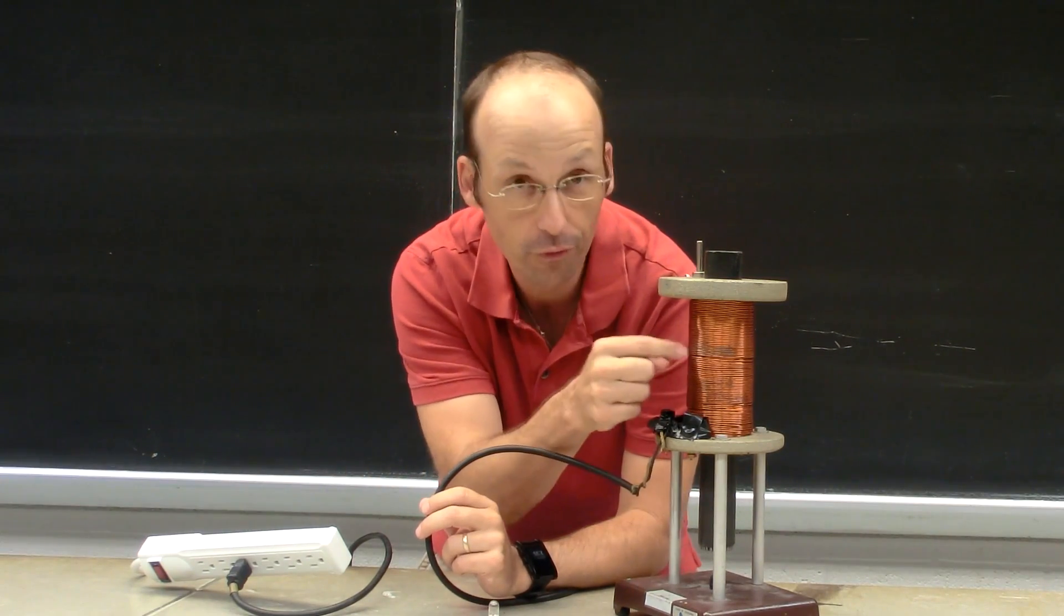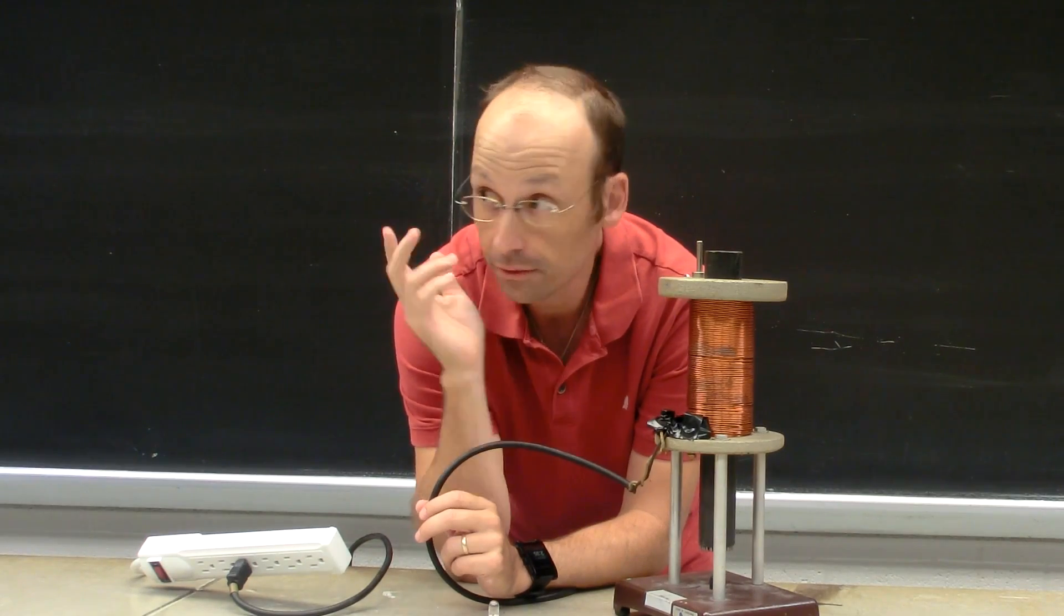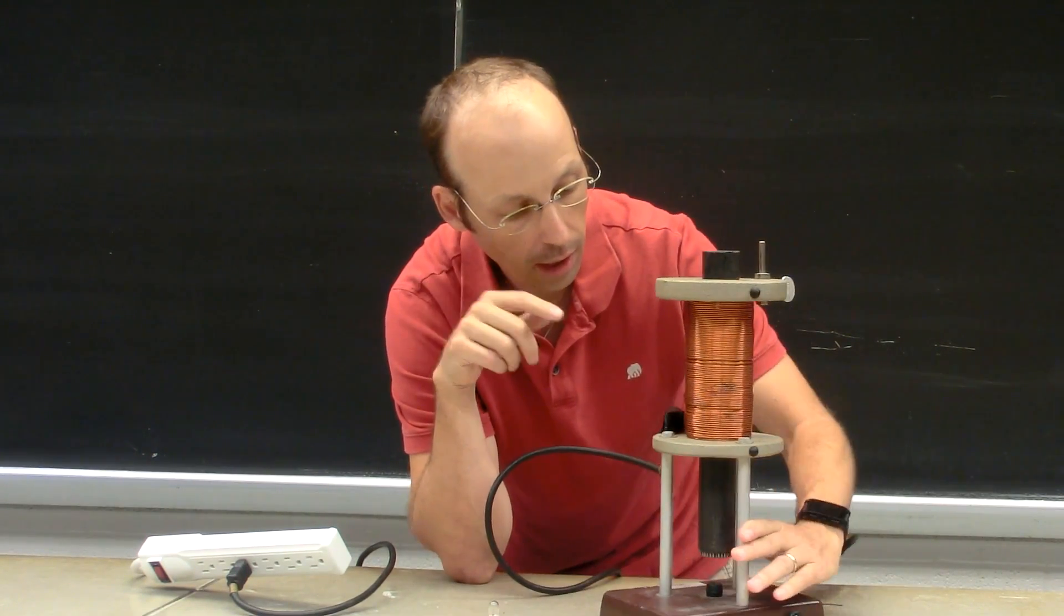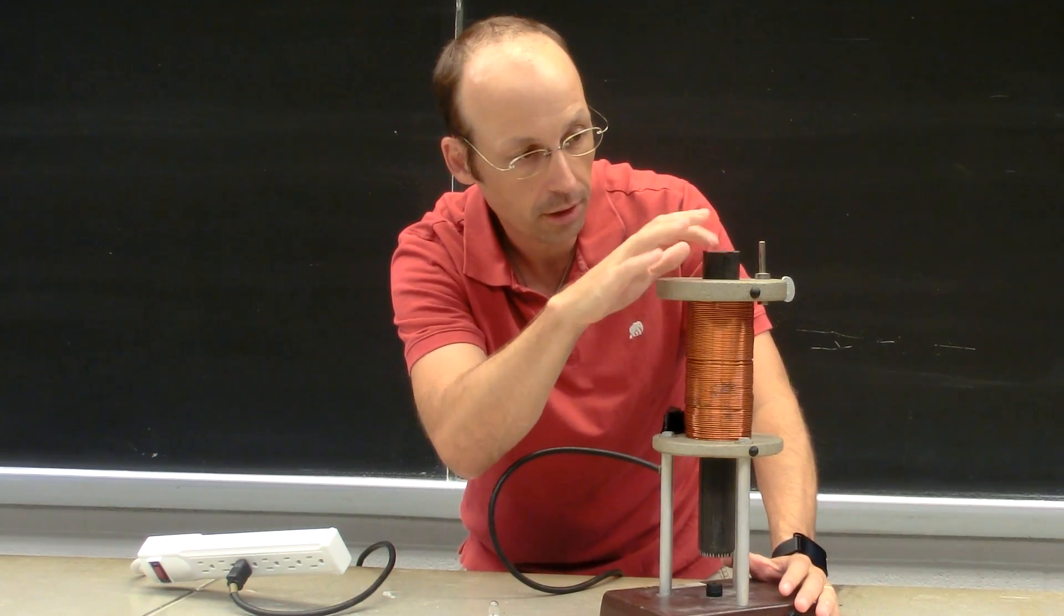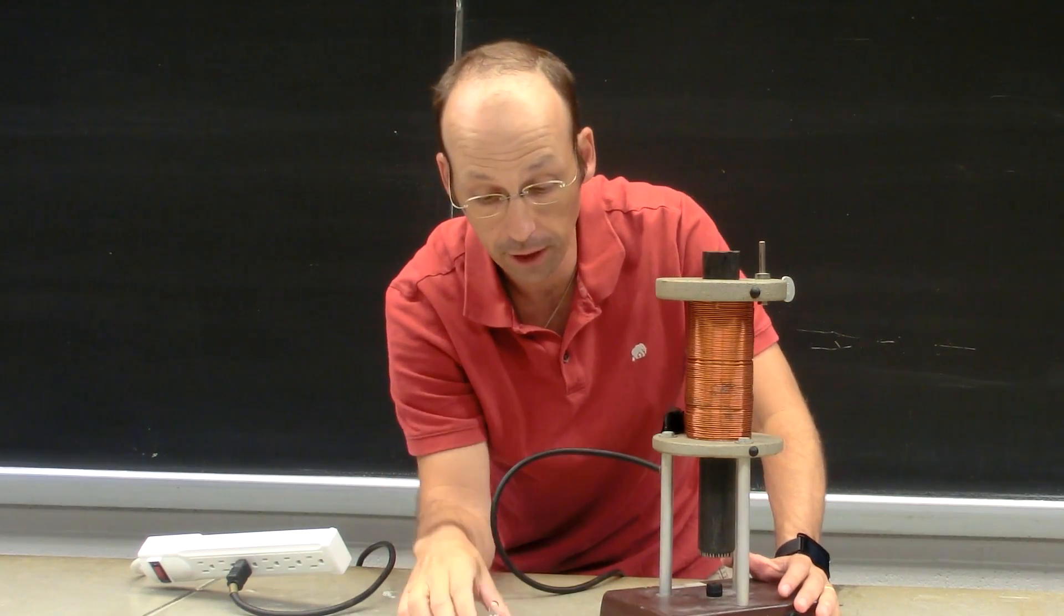You turn it on, current runs through this at alternating current just like in the outlet. So when I turn this on, this makes a changing magnetic field up here. The iron bar in the middle just makes the effect a little bit greater.